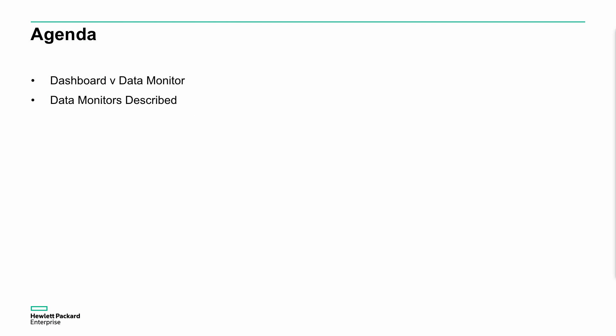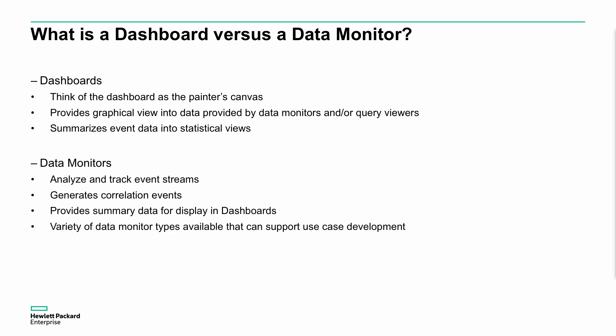We're going to talk about what is a dashboard and how is that in comparison to a data monitor, and how do we use data monitors. A dashboard is a canvas that we can put data in. It could be a geographical view or other things, but we're bringing together and summarizing event data into different statistical views. A data monitor is something that allows us to analyze and track event streams, generate correlation events, and provide summary data to the dashboard.